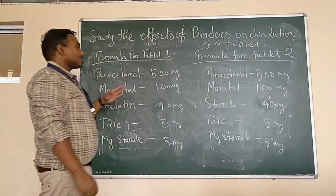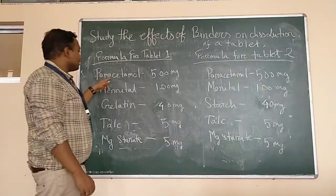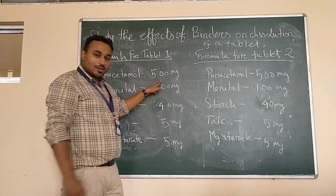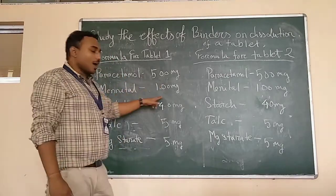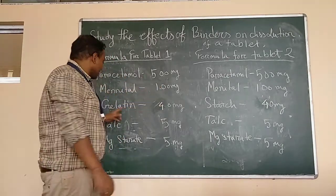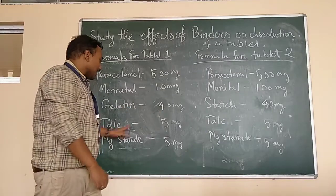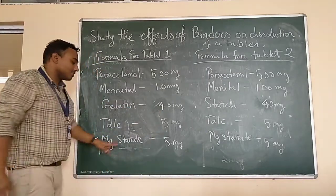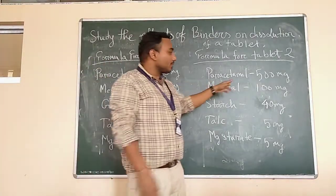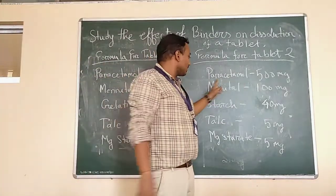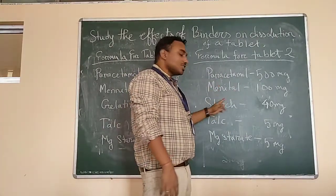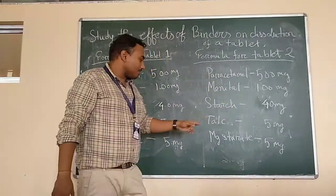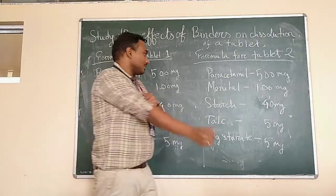The first formulation contains Paracetamol 500 mg, Mannitol 100 mg, Gelatin 4 mg, Talc 5 mg, and Magnesium stearate 5 mg. The second formulation contains Paracetamol 500 mg, Mannitol 100 mg, Starch 40 mg, Talc 5 mg, and Magnesium stearate 5 mg.